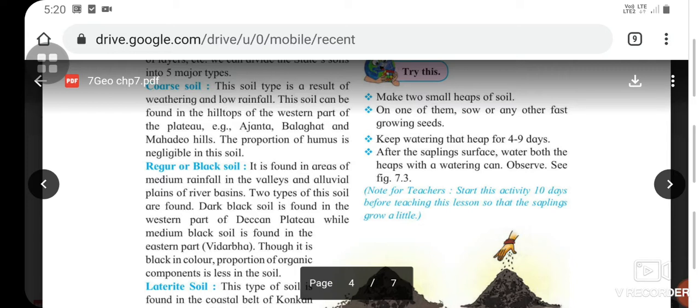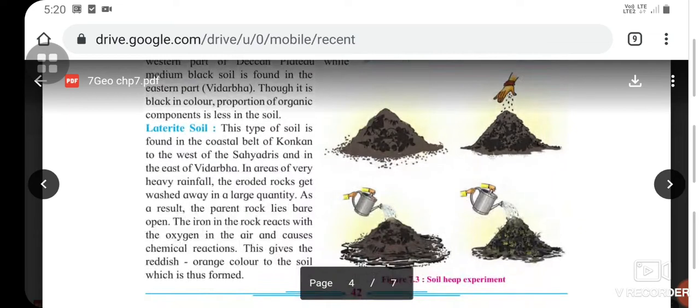Another is regur and black soil. It is found in areas of medium rainfall, in valleys and alluvial plains of river basins. Two types of this soil are found: dark black soil in the western part of Deccan plateau, while medium black soil is found in the eastern part of Vidarbha. Though it is black in color, the proportion of organic components is less in this soil.